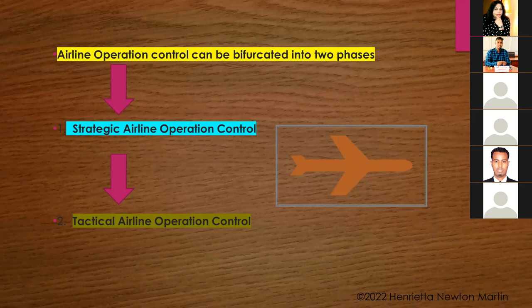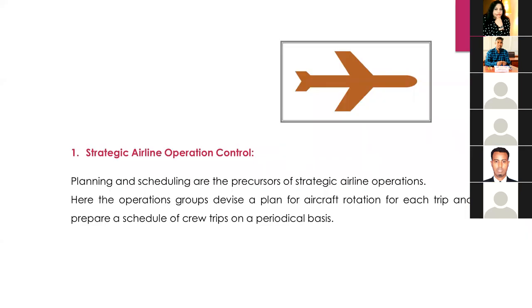Airline operation control can be bifurcated into two types: strategic airline operation control and tactical airline operation control. For strategic airline operation control, planning and scheduling are the precursors. Planning and scheduling are mandatory before charting out any airline operations — these are the two important functions that must be carried out first.